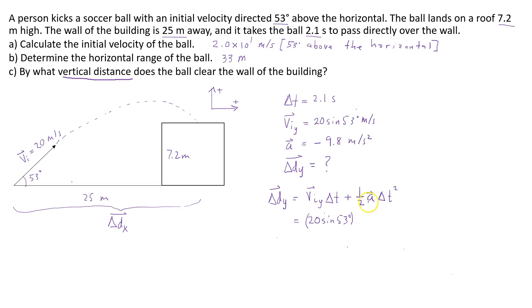Delta t is 2.1 plus 1/2 times negative 9.8. And it's negative because I chose the sign convention of up being positive. And gravity is pulling the ball towards the ground, which is down, times 2.1 squared.